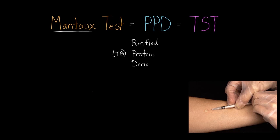The location of the test is also a clue here with TST. This is a tuberculin, again referring to tuberculosis, tuberculin skin test. This tells you where we're going to put all that protein - we're going to put it in the skin.